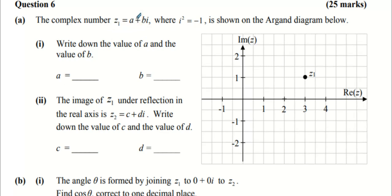The complex number z₁ is a + bi where i² = -1. We're going to say that this is the point (3,1), so this is the point 3 + i. That means your a value is 3 and your b value is 1.